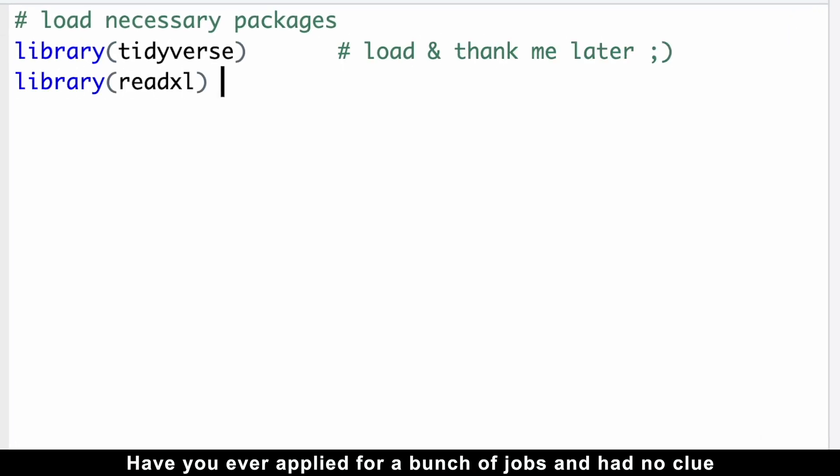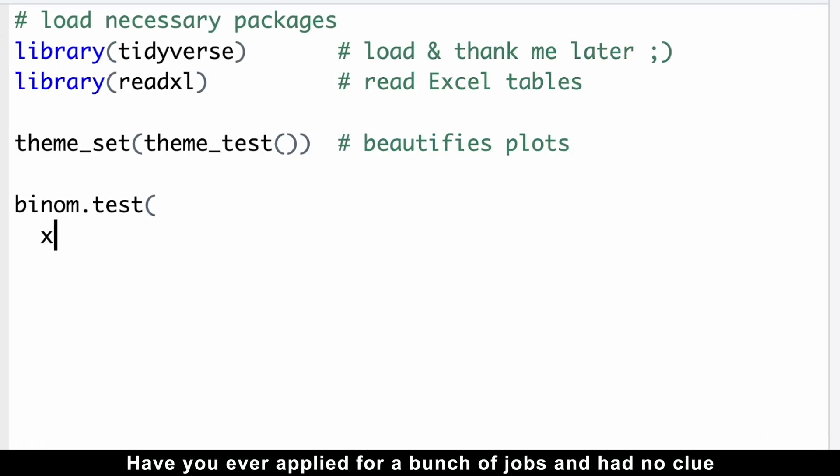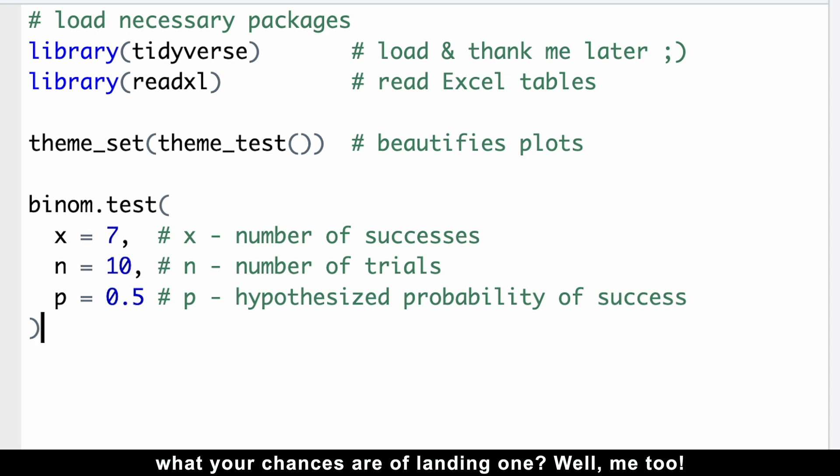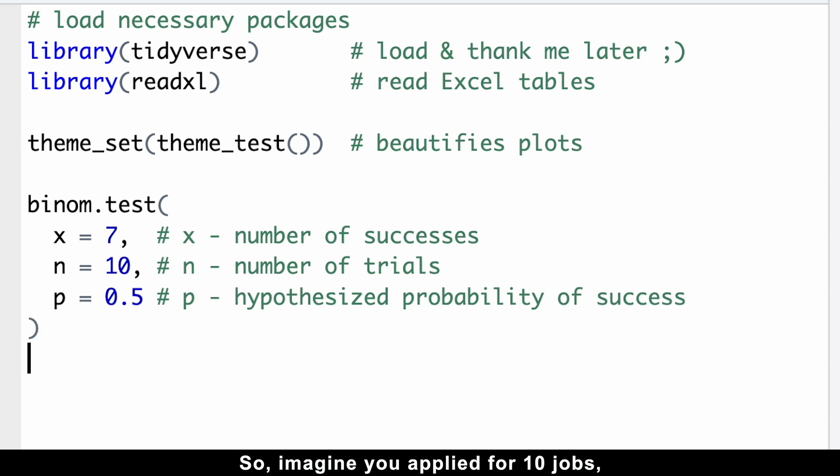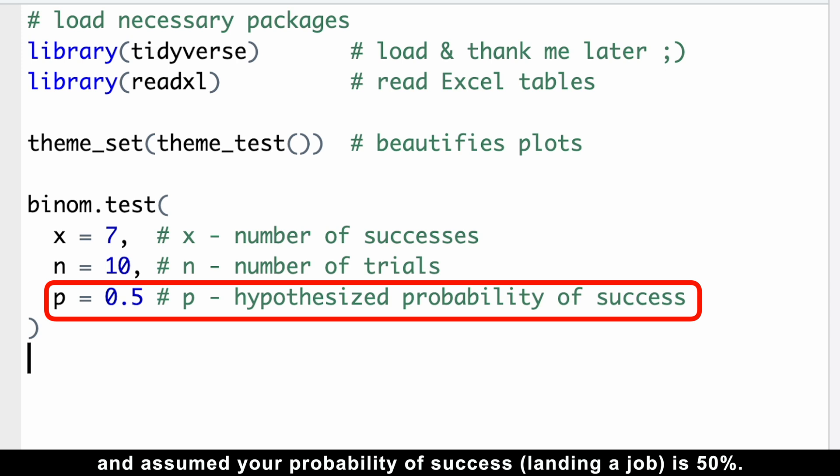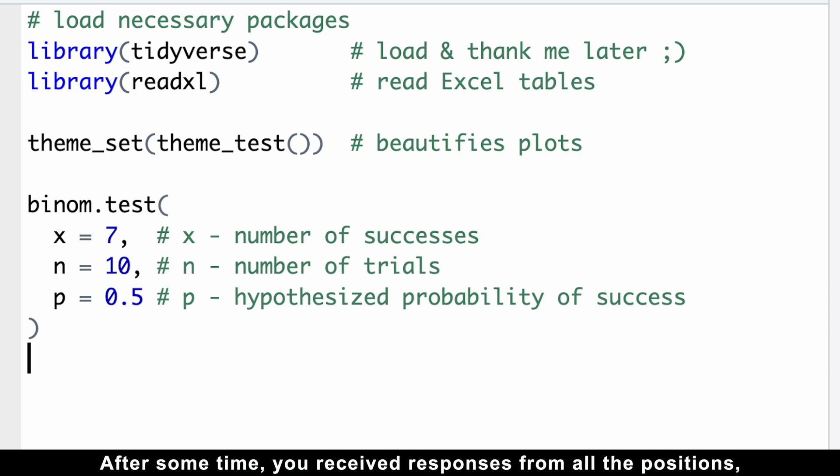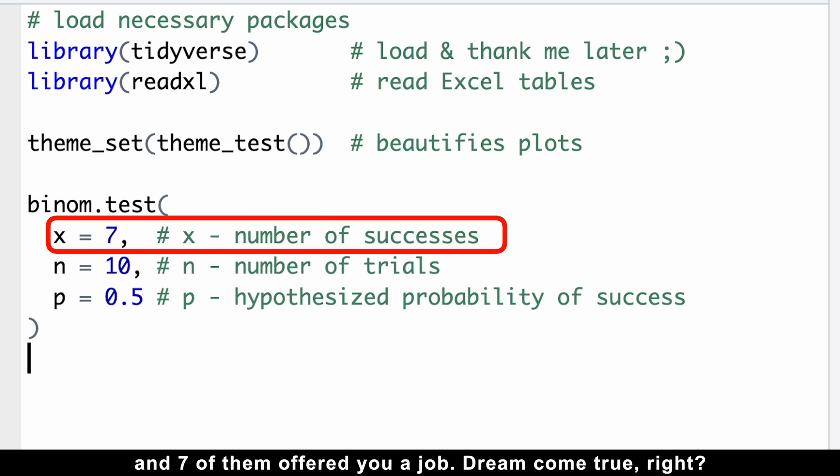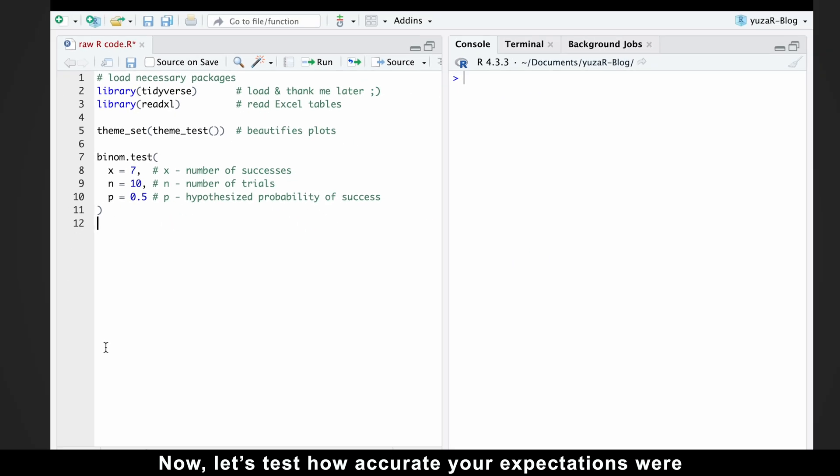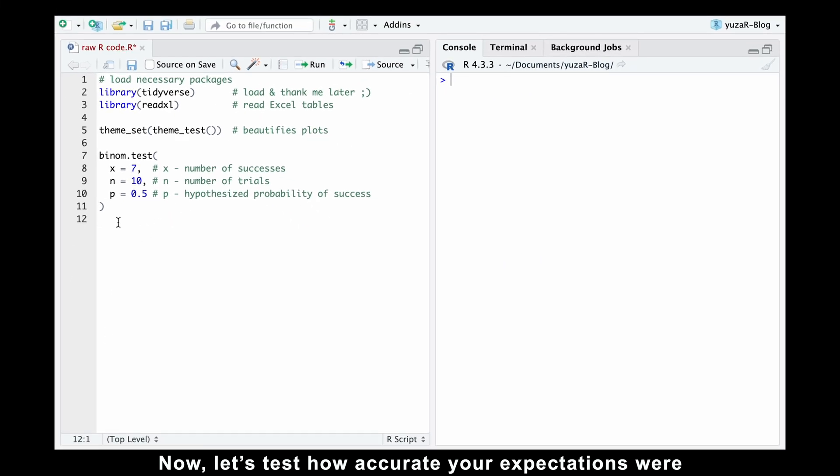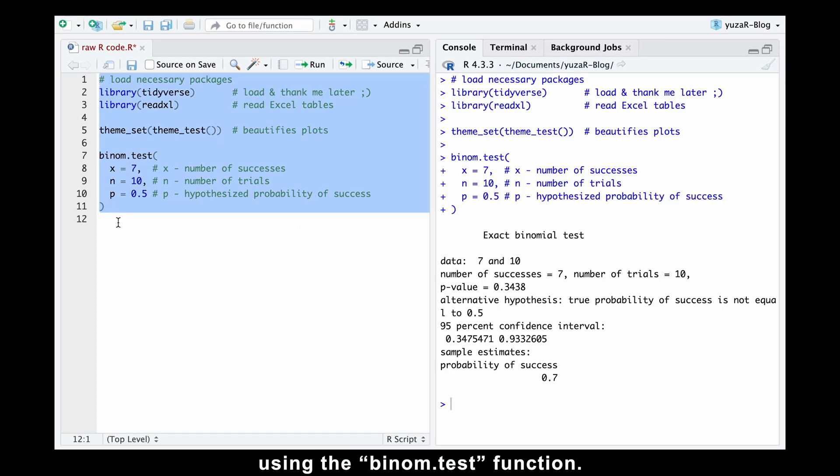Have you ever applied for a bunch of jobs and had no clue what your chances are of landing one? Well, me too. So imagine you applied for 10 jobs and assumed your probability of success landing a job is 50%. After some time, you received responses from all the positions and 7 of them offered you a job. Dream come true, right? Now, let's test how accurate your expectations were using the binomial test function.